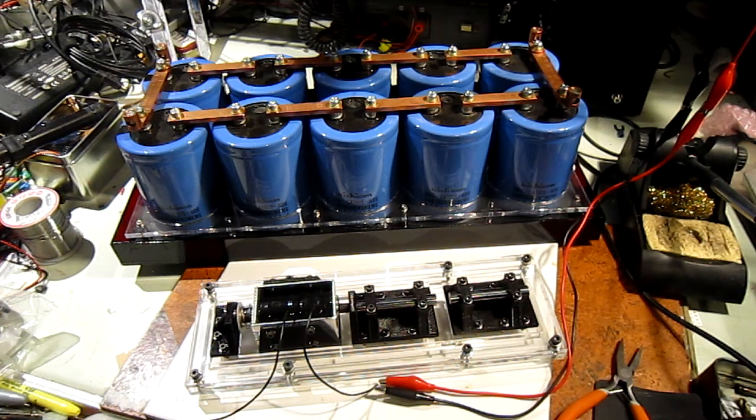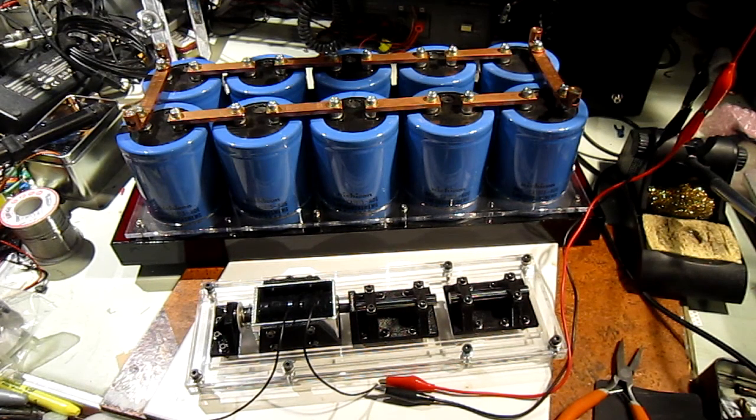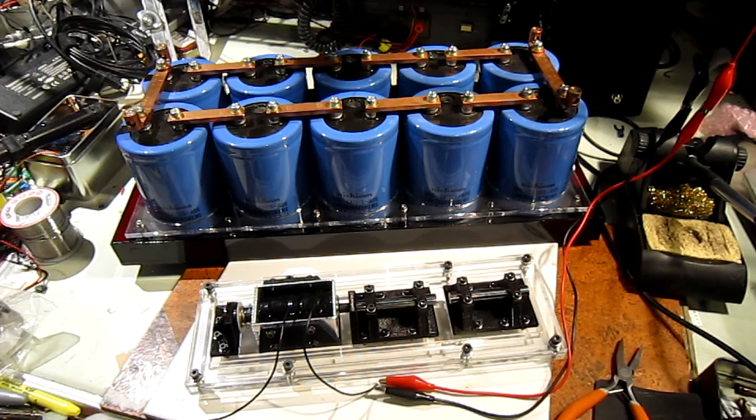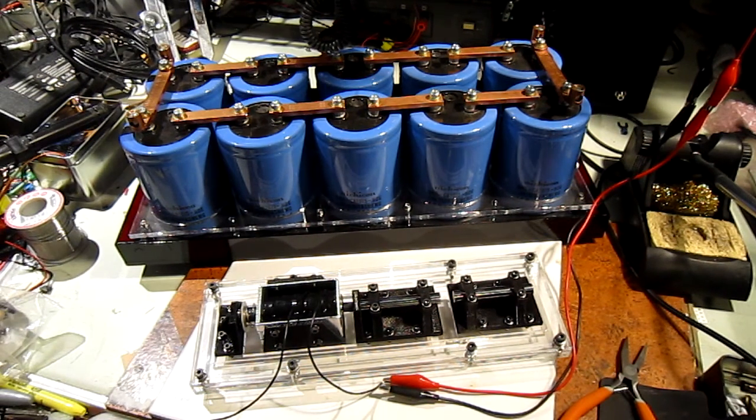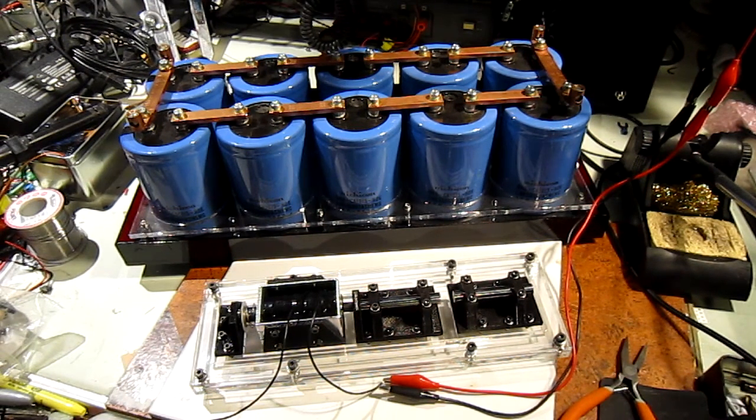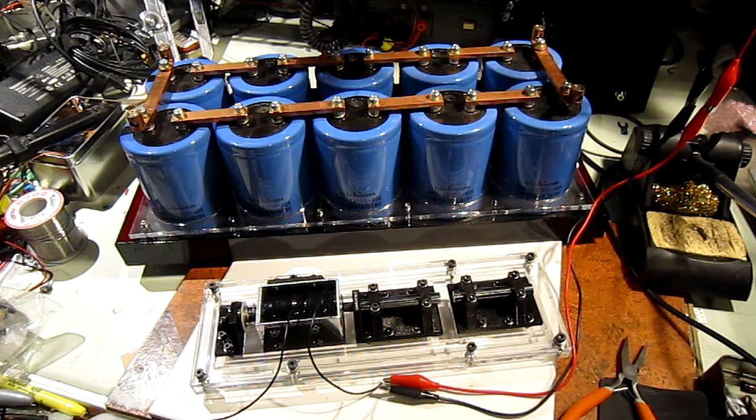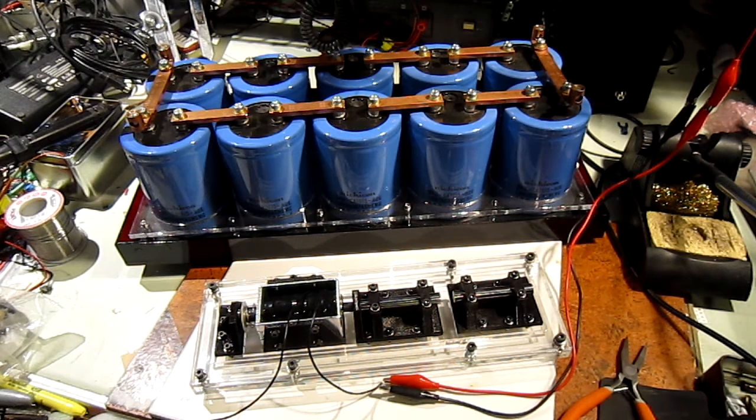The idea is this is going to be for a ring launcher, which is a form of impulse generator. So we charge up the bank of capacitors with a microwave oven transformer that's been rectified to DC.